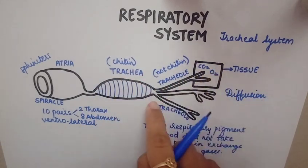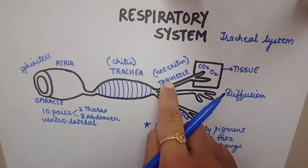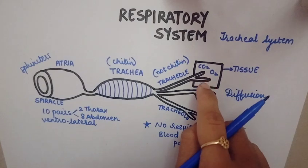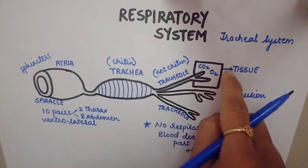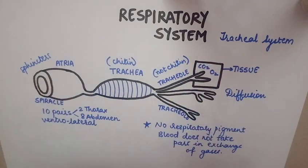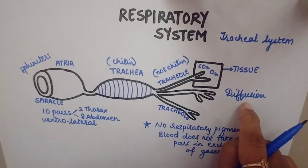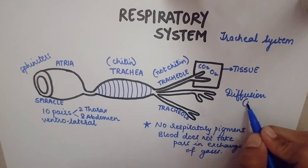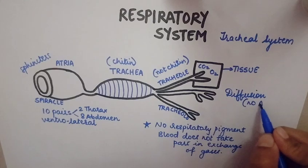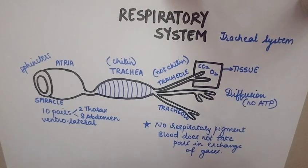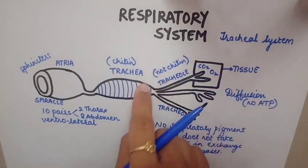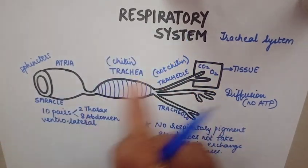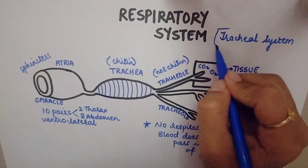The trachea is further divided into many fine branches called tracheoles, which are not lined by chitin. The tracheoles directly end into the tissues, so tissues directly exchange gases with the surrounding by diffusion — passive transport with no ATP spent. Since the trachea plays a central role, the respiratory system of the cockroach is also called the tracheal system.